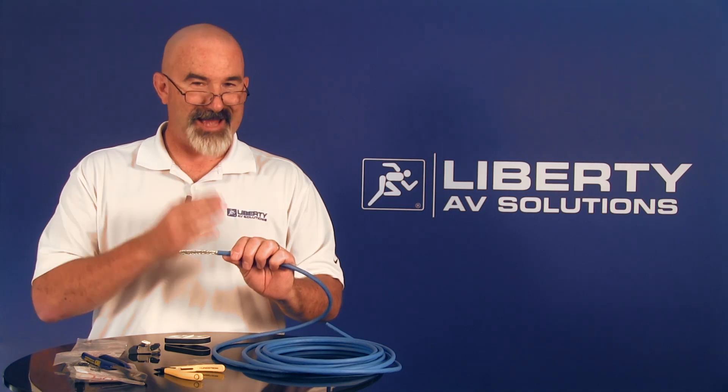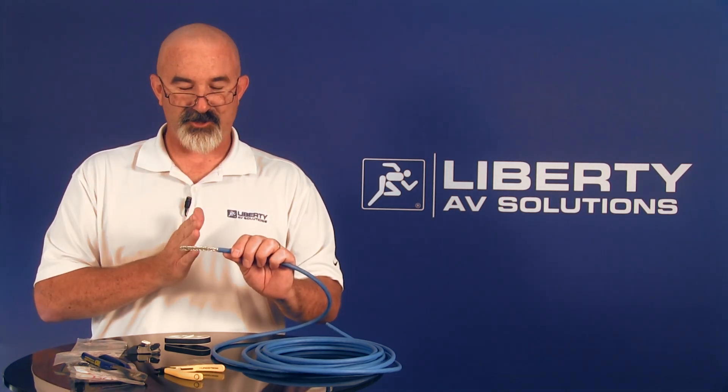Category 7 cable is a little unique in the construction. It has two different types of layers of shields. You've got a braid shield and then you have a foil shield. They call this design SFTP. So SFTP is outside shielded, foil inside twisted pairs.